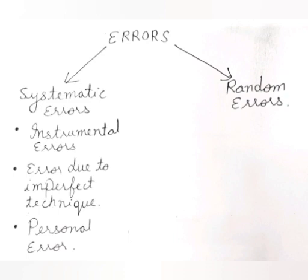In short, errors are the mistakes which we generally make during measurement, and these errors are caused due to various reasons — like some external cause or some problem with the instrument. So there are various types of errors. Basically there are two types: one is systematic error and the other one is random error.